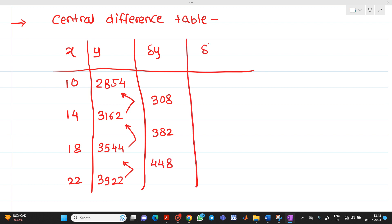Here next will be del square y. So 382 minus 308, you will get it as 74. 448 minus 382, you will get it as here, if you see here, you will get it as this.